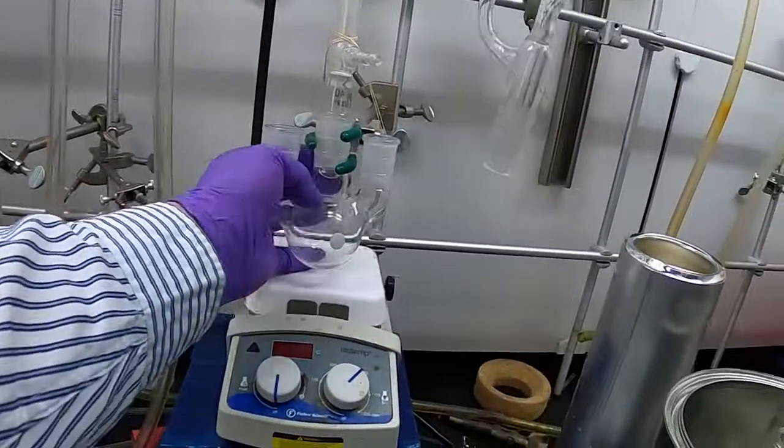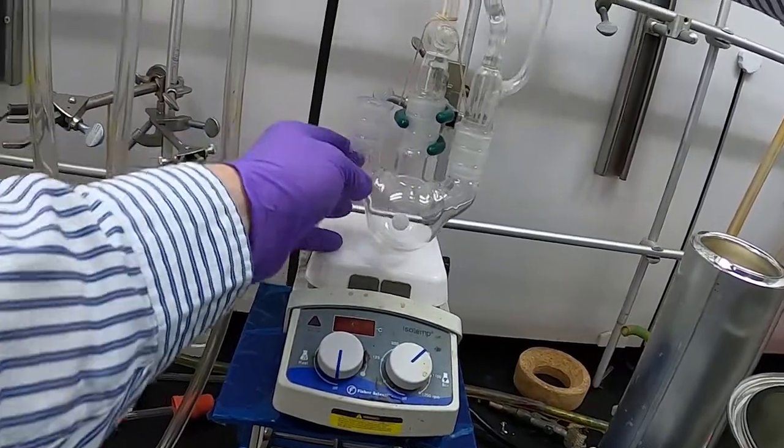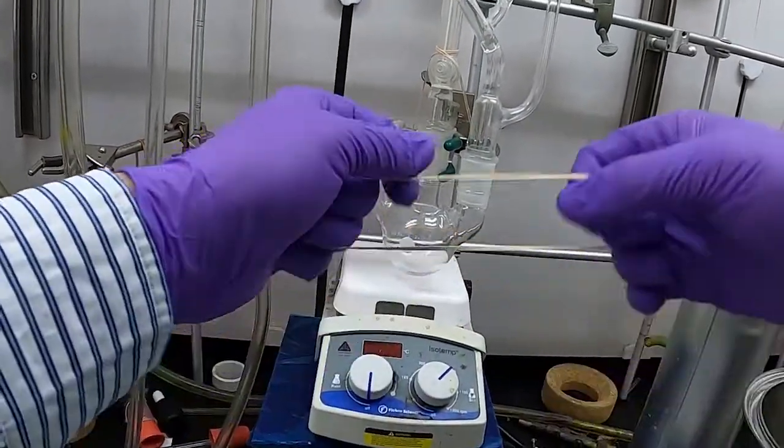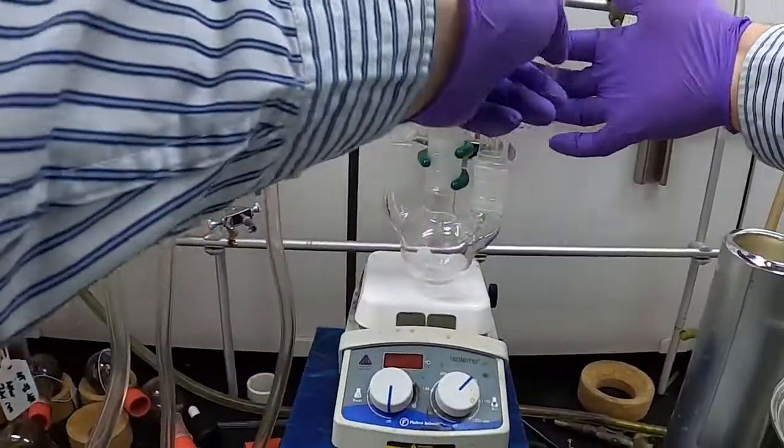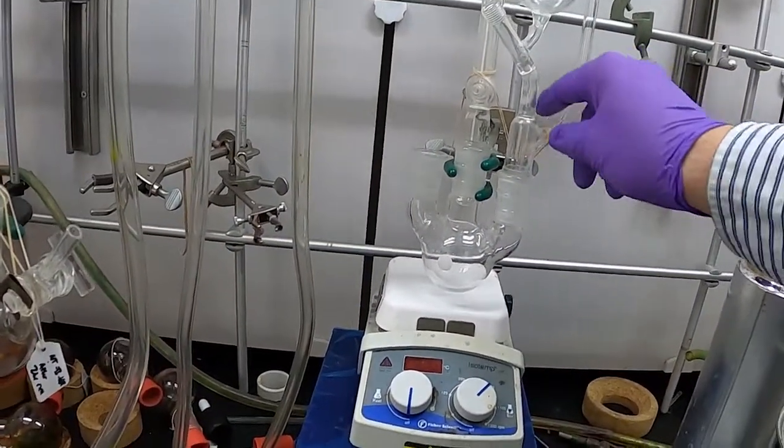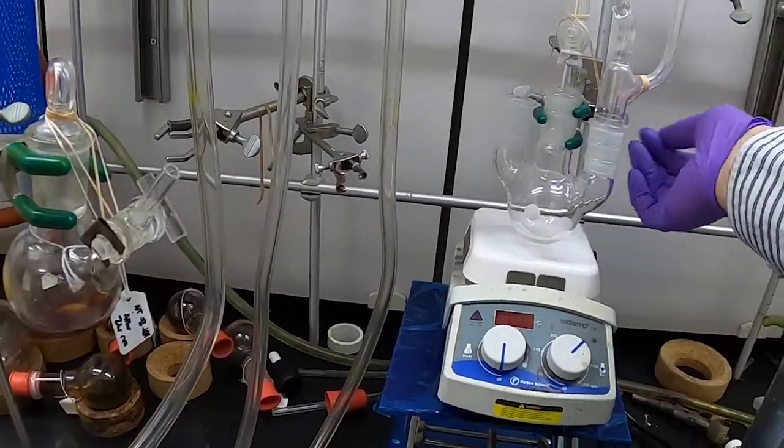Same thing goes now if we add an addition funnel. So we'll add an addition funnel here. If you want to have some kind of downward pressure, again you can do something like this: put it on there and then back down. So again, holds it down—some kind of downward pressure. You can sometimes even wrap it around here if you want, anything along those lines.